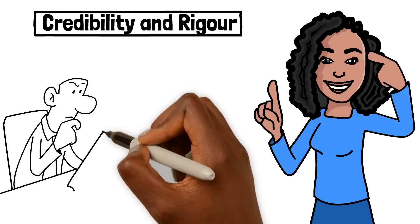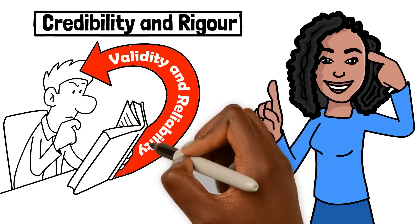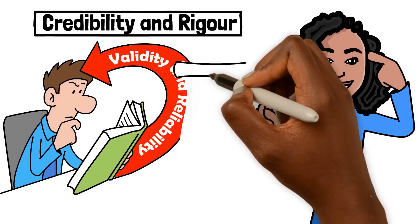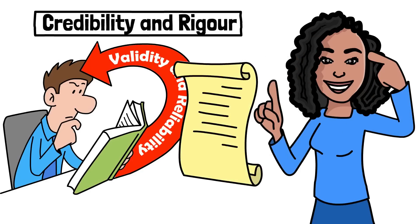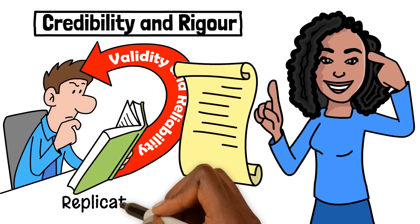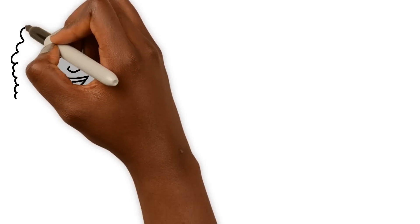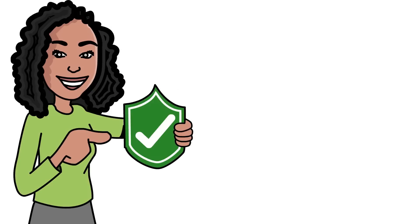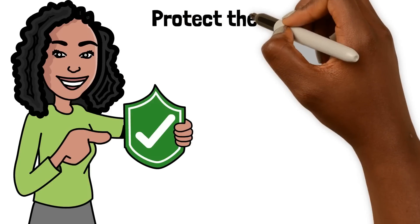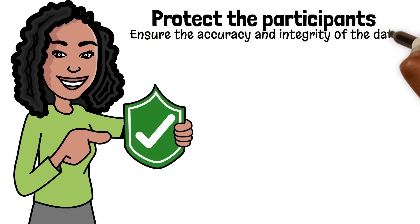Having a clear and comprehensive overview of the data collection methods is essential for the credibility and rigour of the research study. It allows the reader to understand how the data will be gathered and to evaluate the validity and reliability of the study. A clear overview also allows other researchers to replicate the study, which is an important aspect of the scientific process. It also helps to ensure that the study is conducted in an ethical and responsible manner, with appropriate measures taken to protect the participants and ensure the accuracy and integrity of the data.